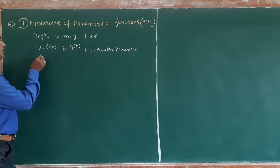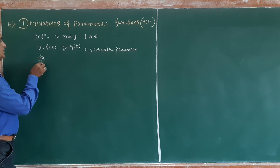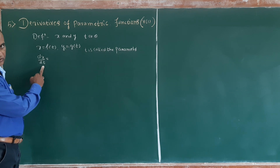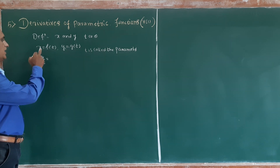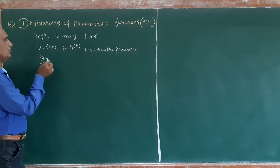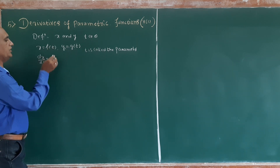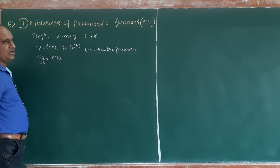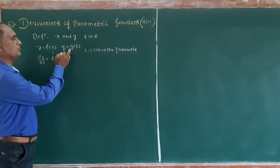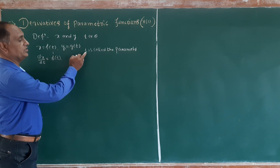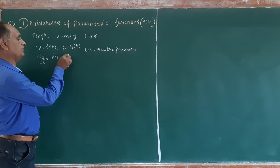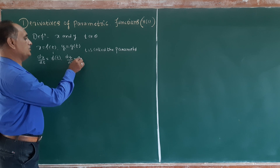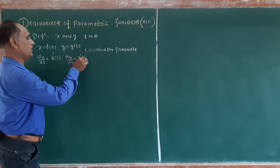So dx/dt is equal to differentiating the above equation with respect to t. Therefore, dx/dt is equal to f dash of t. Similarly, differentiating y = g(t) with respect to the parameter t, we get dy/dt is equal to g dash of t.